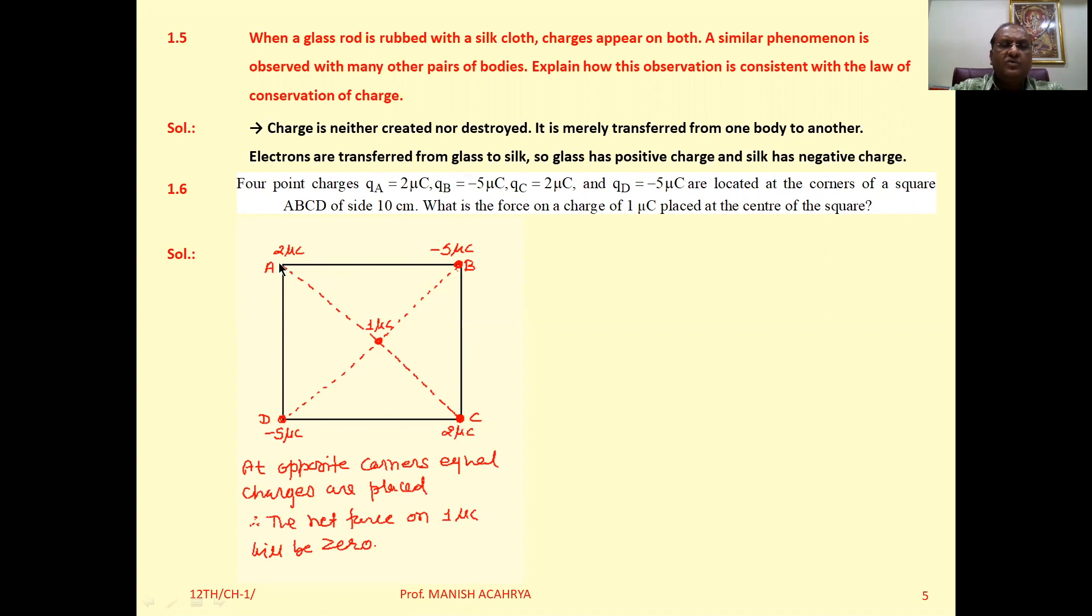the corners of the square. We can observe that diagonally opposite charges are identical. So at A, 2 microcoulombs; at C, 2 microcoulombs. This implies that if at the center of these two charges any charge is placed, then the net force will be zero.